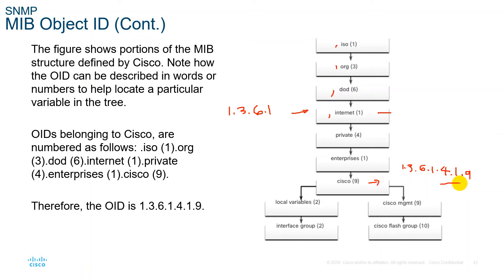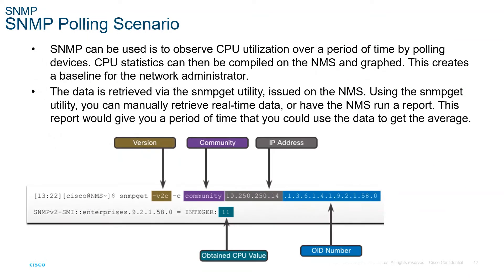Polling can be used to observe CPU utilization over time — the SNMP manager gets data from devices, which is compiled on network management software to create graphs similar to a task manager. This creates a baseline or benchmark for network administrators to use in decision making. Data is retrieved via the SNMP get utility on the NMS.